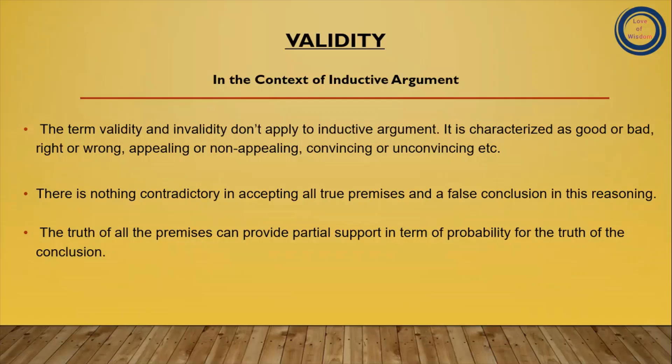Deductive argument mein is baat ki guarantee hoti thi ki agar premises true hain toh conclusion bhi true hoga, but yeh guarantee yahan nahin hai. Yahan partial support hota hai. Conclusion aur premises ke beech necessary relation nahi hota — probability ka relation hota hai. Is liye yahan hum guarantee nahi de sakte.